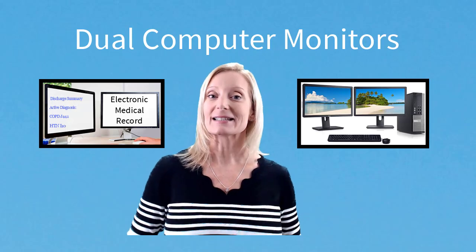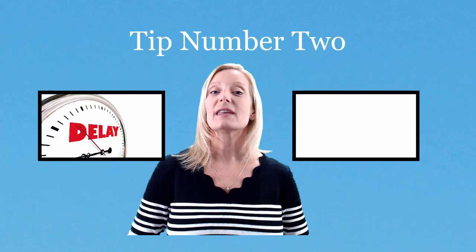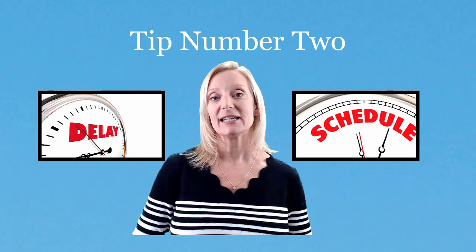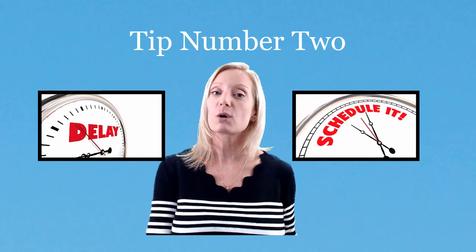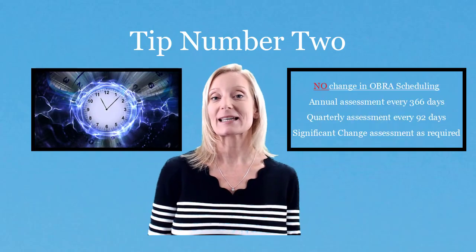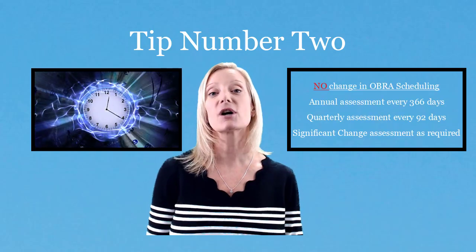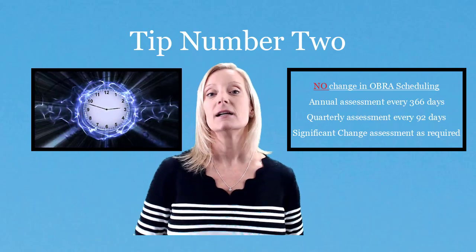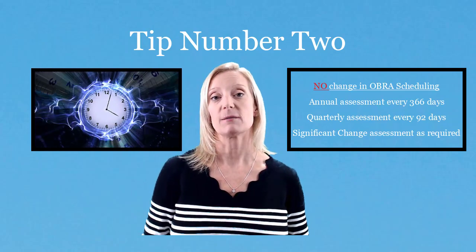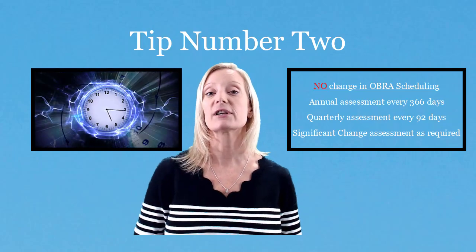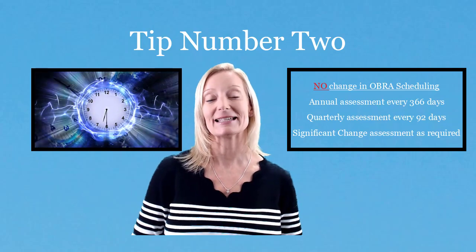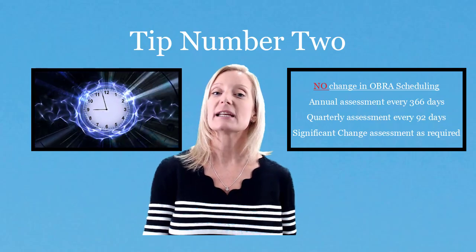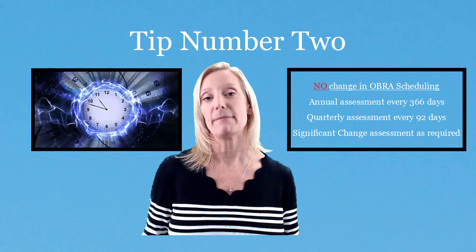My second tip is to think about your OBRA schedule. Do you have any assessments that you can push forward? Always remember that the OBRA schedule is not changing, and you're going to need an assessment every 92 days. Also your annual requirements — you must have an annual every 366 days. So you want to make sure you follow the guidelines, but can you move any up? Or maybe even push some back?